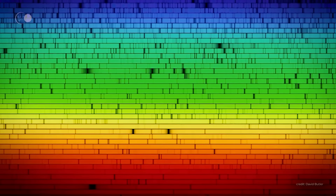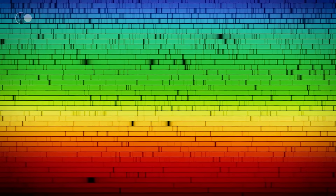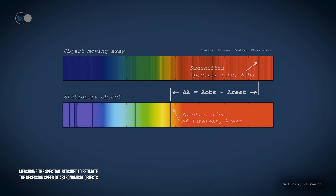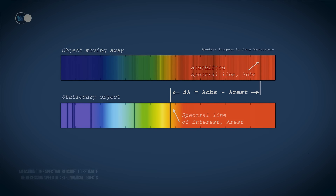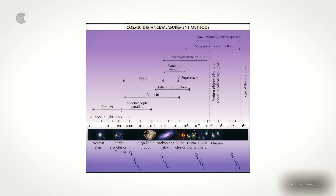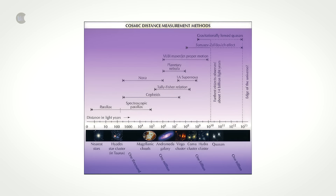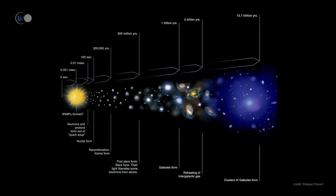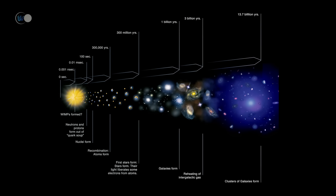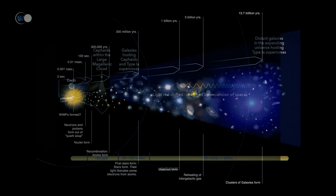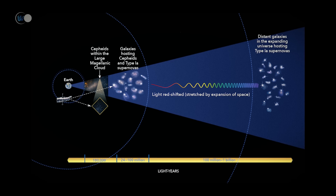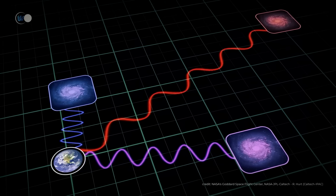Assessing the age of observed objects in the universe is highly complex. To simplify, we first observe the shift of spectral lines in the electromagnetic spectrum of the observed object, which measures the redshift. Then we convert it into cosmic time, which depends on the cosmological model used — whether the cosmological principle, the expansion model, or a model based on parameters such as the Hubble constant, which are often imprecise. The greater the redshift, the more distant the observed object.